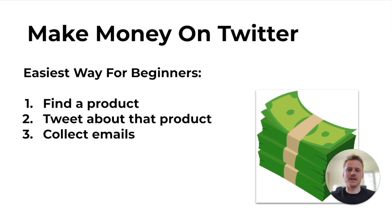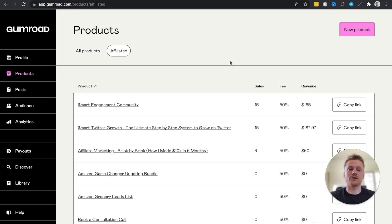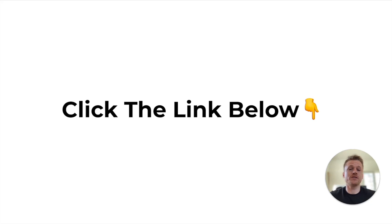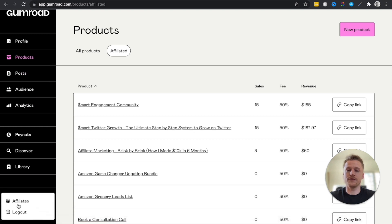The easiest way to make money with Gumroad is affiliate marketing. Find a product vendor — usually you purchase their course first — then message them or use their affiliate link to apply. Once approved, I recommend collecting emails with your Gumroad account to promote affiliate products on the back end. In the Affiliates tab, you'll see all your approved products. These are products I can promote because I've personally reached out to the vendors and they approved my affiliate requests. If you're interested, check out my Twitter Affiliate Masterclass below — I give affiliate approval for all my Gumroad courses, making it easy to start as a beginner.